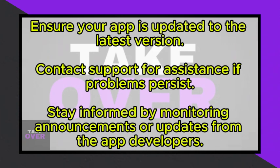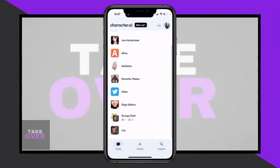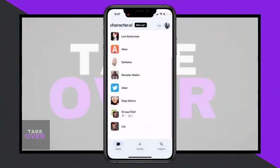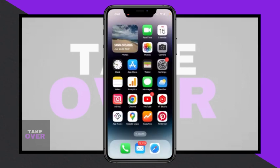Third, monitor for updates — stay informed about any announcements or updates from the app developers regarding the resolution of these issues. By following these steps, users can stay informed and potentially resolve any issues they encounter with group chats in the Character AI app.